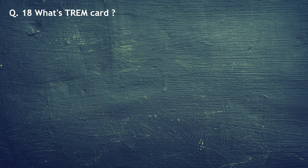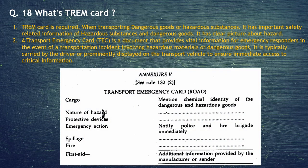Question number 18: What is the TREM card? The TREM card is required when transporting dangerous goods or hazardous substances. It has important safety-related information about hazardous substances and dangerous goods, and a clear picture about the hazard. A Transport Emergency Card, or TREM card, is a document that provides vital information for emergency responders in the event of a transportation incident involving hazardous material or dangerous goods. It is typically carried by the driver or permanently displayed on the transport vehicle to ensure immediate access to critical information. This is under Central Motor Vehicle Rules 1989, under Rule 132 and Schedule 5.